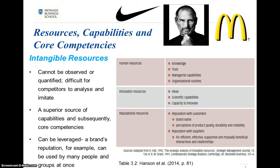Finally, there are also reputational resources — the reputation with customers, the brand name, and perceptions of product quality, durability and reliability. McDonald's is a great example because everybody knows what that symbol means, and the same with the Nike symbol — we instantly look at those and know exactly which company they represent. There can also be reputation with suppliers, which can be a key contributing factor to a firm's competitive advantage. Having efficient, effective, supportive and mutually beneficial interactions and relationships with your suppliers can be really important for a firm.